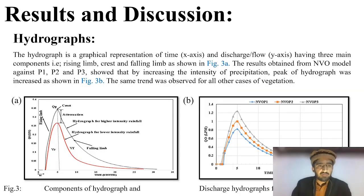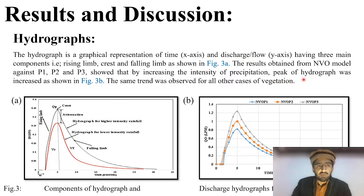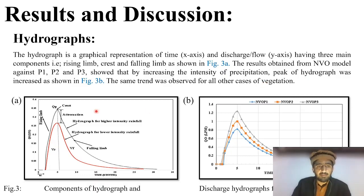Results: A hydrograph is a graphical representation with time on the x-axis and discharge on the y-axis, having three main components: rising limb, crest, and falling limb VF. Results from the no vegetation model against P1, P2, and P3 showed that increasing precipitation intensity increased the peak of the hydrograph, as shown in Figure 3b. With no vegetation, the peak was maximum for the highest rainfall intensity.